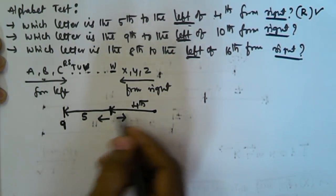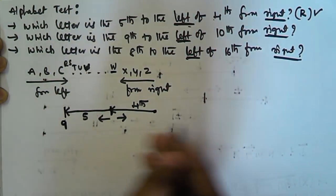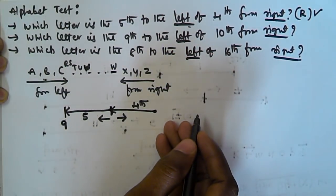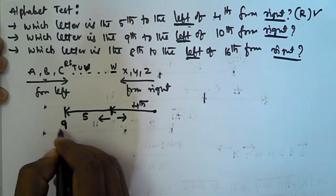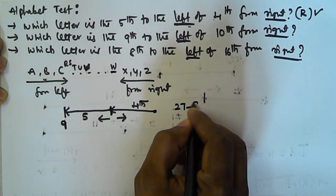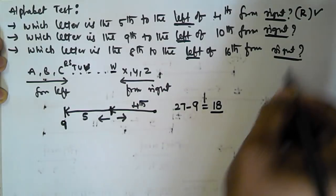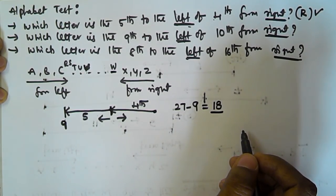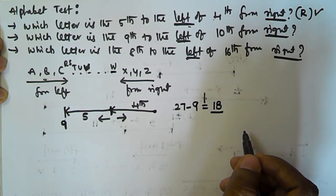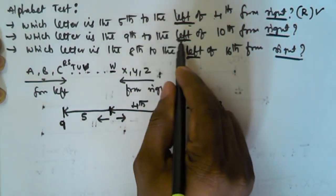So the ninth letter from the right is our target. To convert from right to from left, we subtract from 27: 27 minus 9 equals 18. The eighteenth letter from the left is R — using the EJOTY rule, O is the fifteenth, so O, P, Q, R gives us the eighteenth. The answer is R.